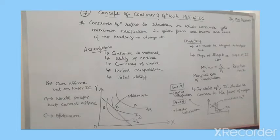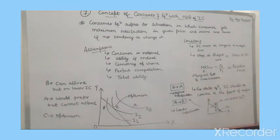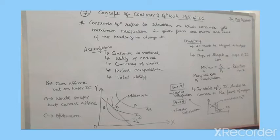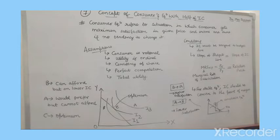Our marginal rate of substitution (MRS) equals the price of good X upon the price of good Y, which is the relative price. So MRS equals relative price. MRS is the slope of the indifference curve, as I told you in the first lecture. So MRS and relative price will be equal. Lastly, for stable equilibrium, the condition is that the IC must be convex to the point of origin.